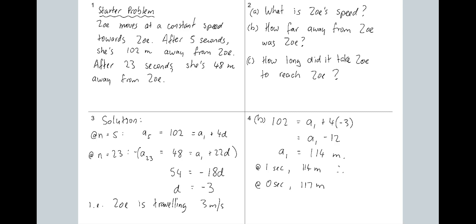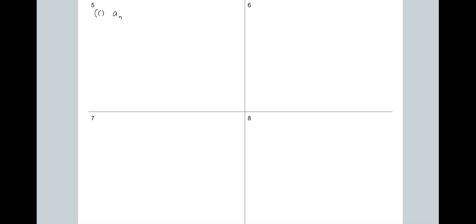Good pickup, William. Any questions? Moving on — Part C: how long does it take Zoe to reach Zoe? We now have a general term. We know that A sub n equals 114 — not 117, because A sub 1 is what we use in the general term — plus n minus 1 times negative 3. Put brackets around negative numbers to make sure you know you're multiplying and not subtracting three.